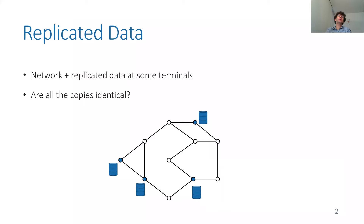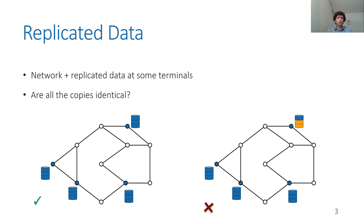In the replicated data problem, we have a system — a network — represented by its communication graph, as seen here. There are some pieces of data replicated among some of the units of the network. We have data centers connected by a network, and some of the data centers contain data that should be identical in all of them. We want to verify that all these copies of data are indeed the same — a classical and very useful problem.